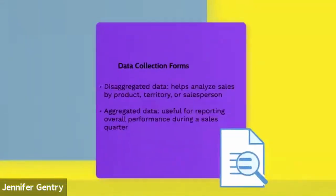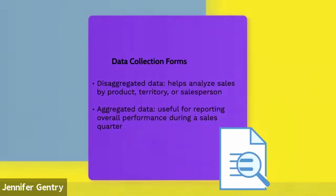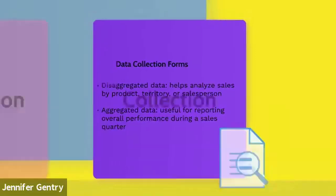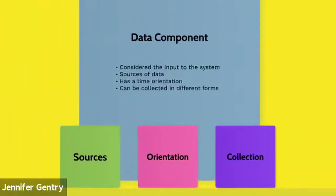There are two collection forms: aggregated and disaggregated. Aggregated is useful for reporting overall performance — think quarterly reports, giving you the big overhead view of what's going on. Disaggregated is more in the weeds and specific — it does analysis by product, by territory, by employee. The disaggregated is a micro view of your data, as opposed to your macro view.